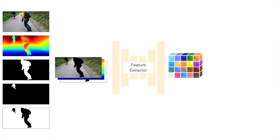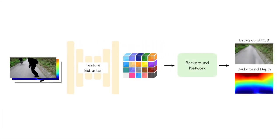Features from these inputs along with the mask are obtained using a shared feature extractor. These features are then fed into a background prediction network that predicts the in-painted background RGB as well as depth.